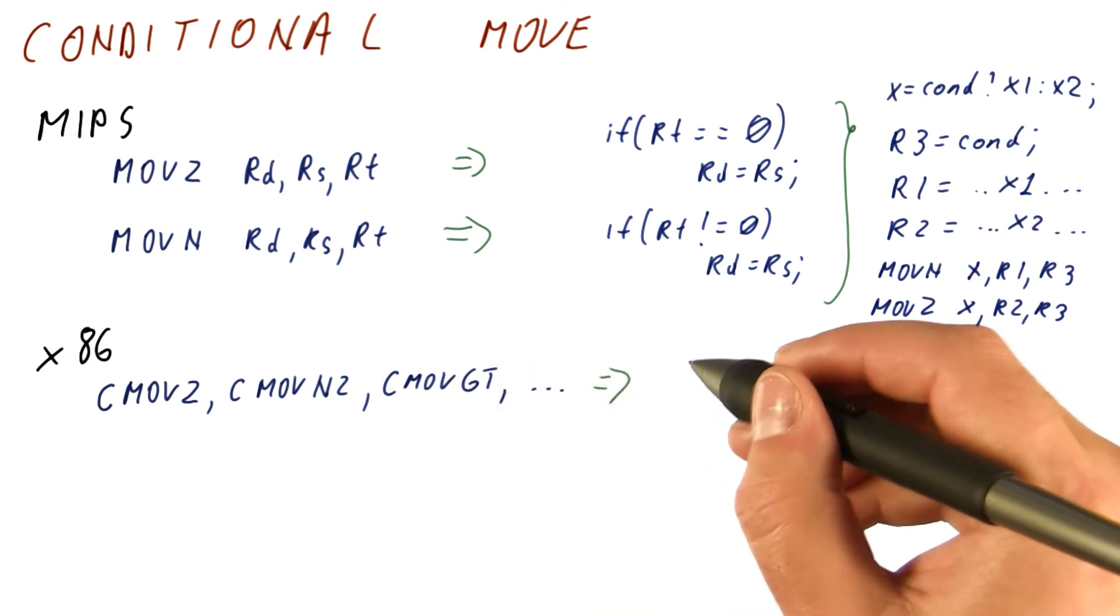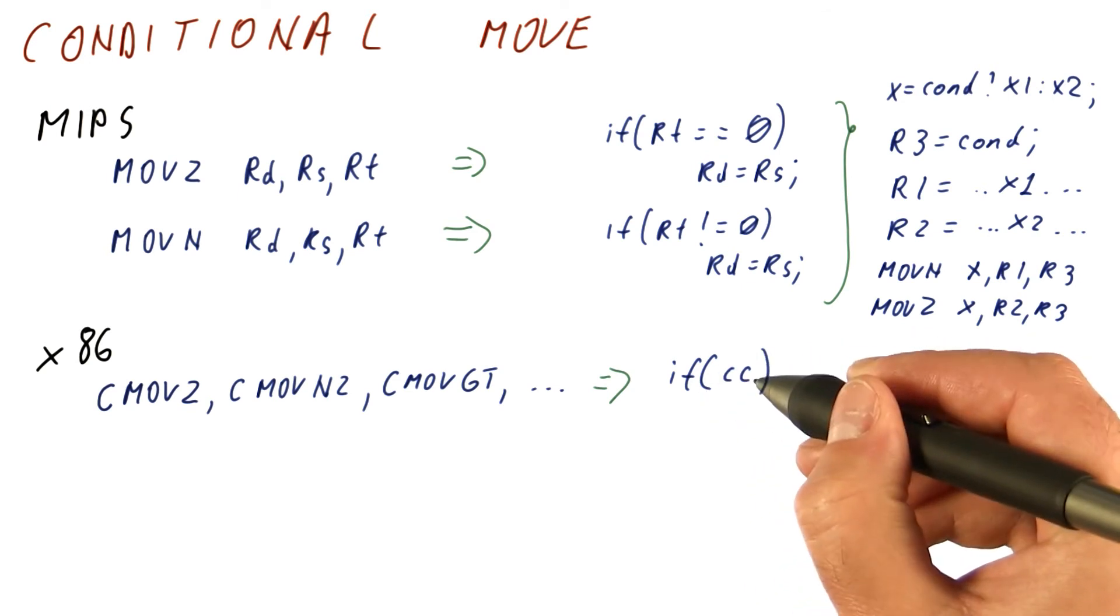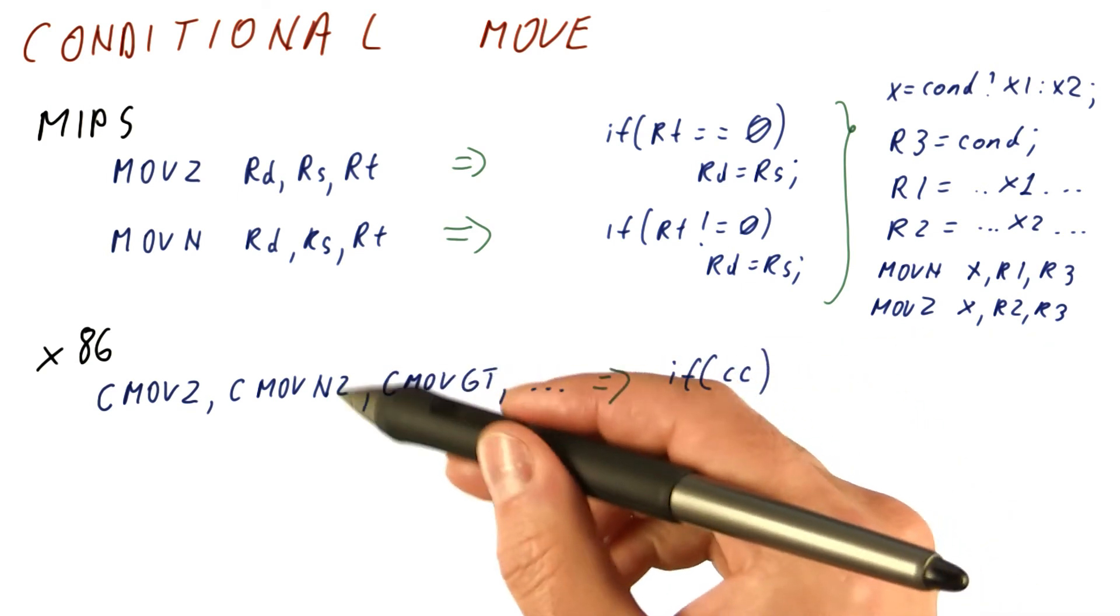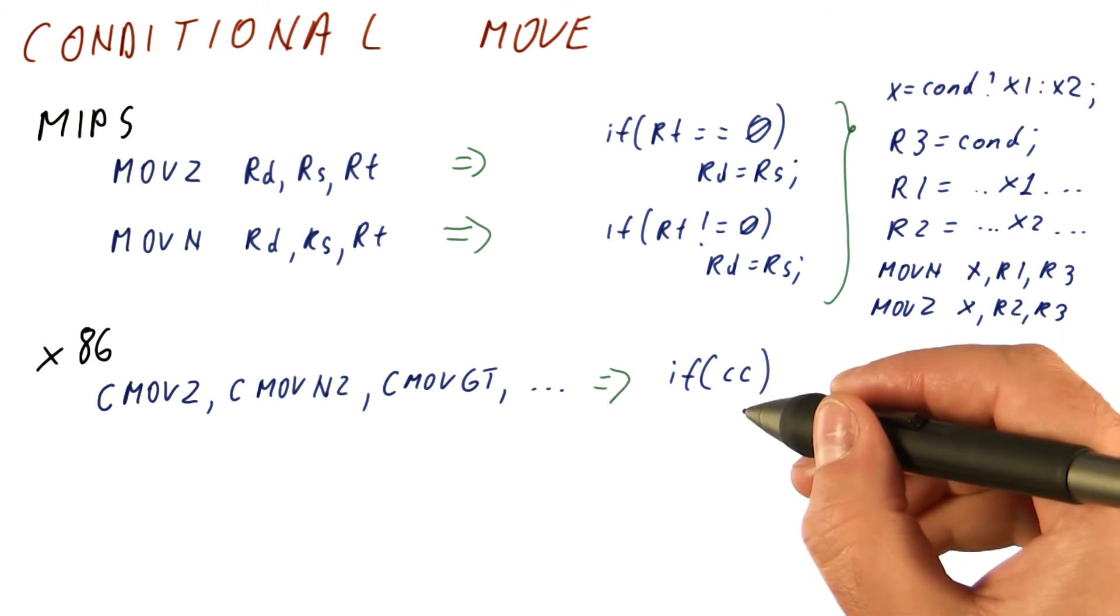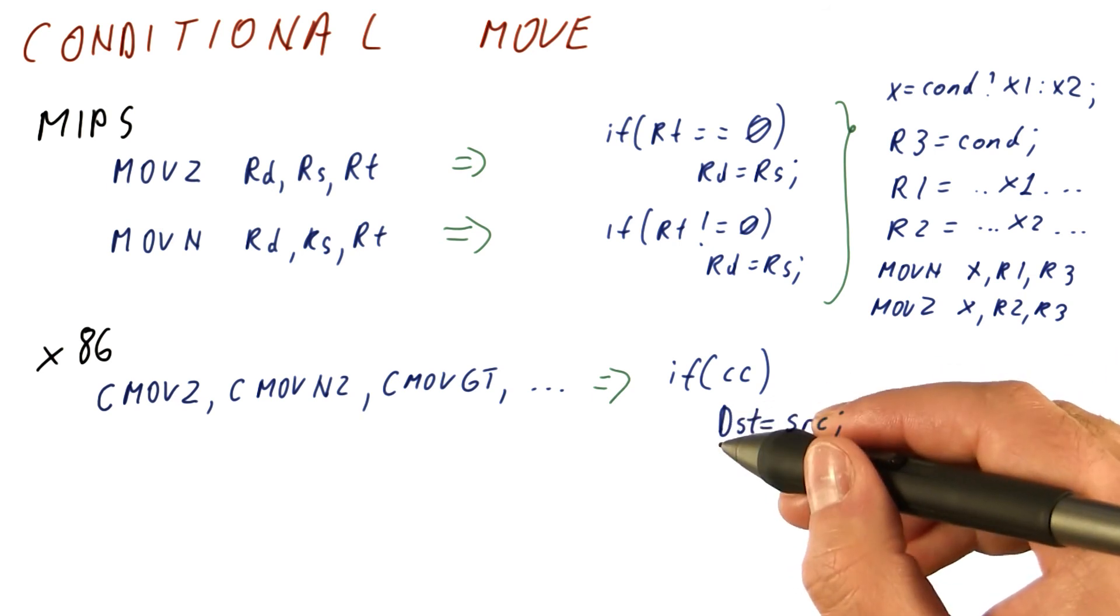And all of these instructions effectively implement the, if the condition codes correspond to one of these conditions, depending on the instruction, then the destination register gets the value of the source register. Otherwise, the destination register is not modified.